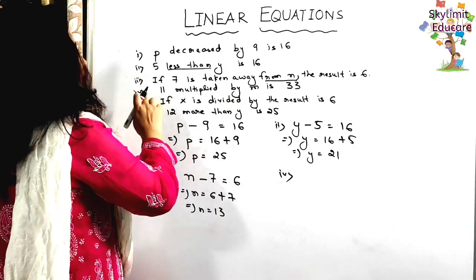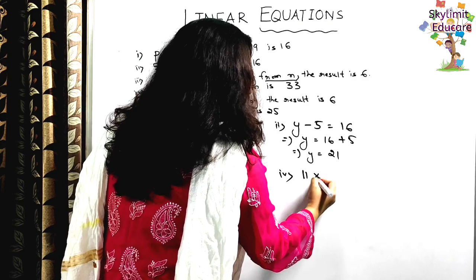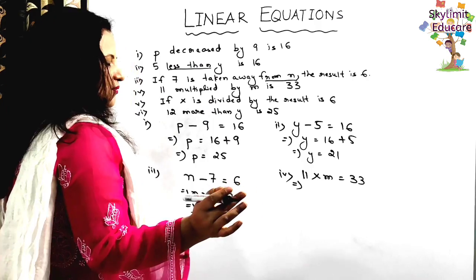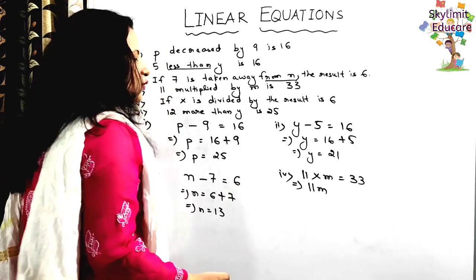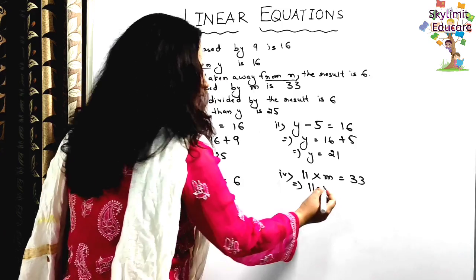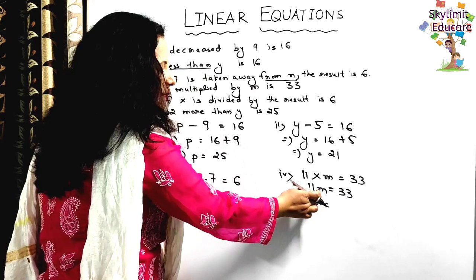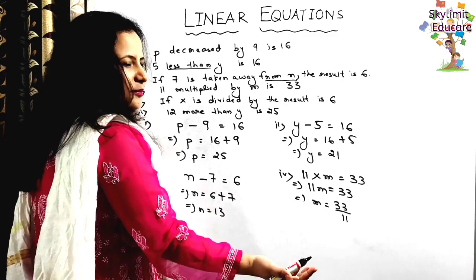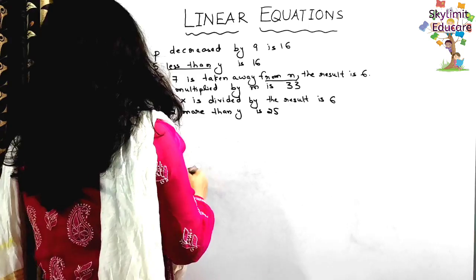Statement 4: '11 multiplied by m is 33.' When multiplying a constant with a variable, write them together: 11m equals 33. Shift 11 to the right-hand side as division: m equals 33 divided by 11 equals 3.